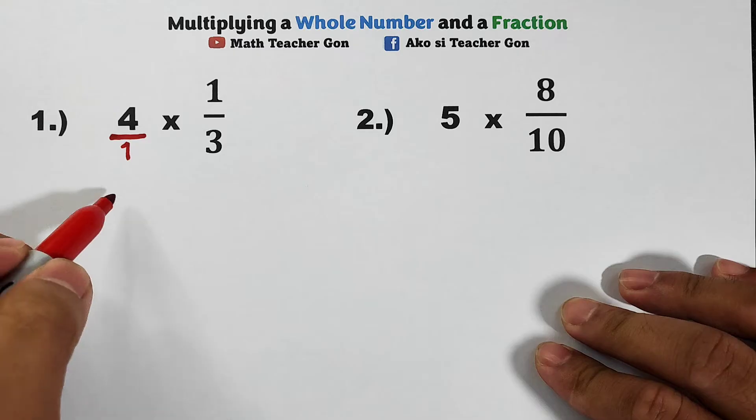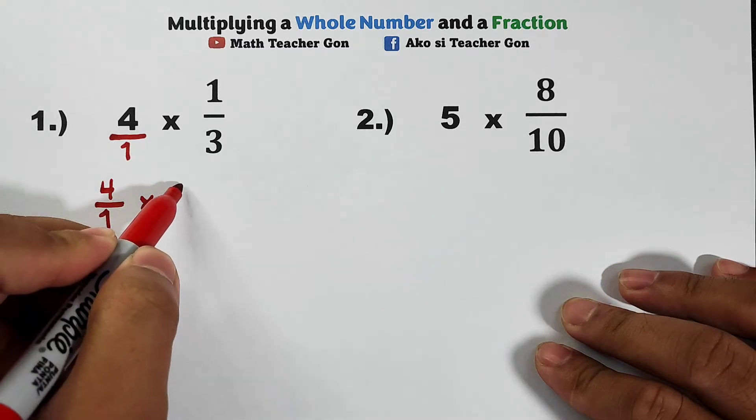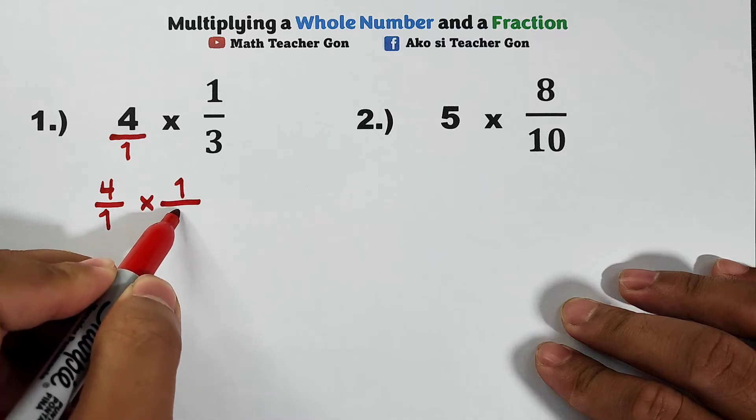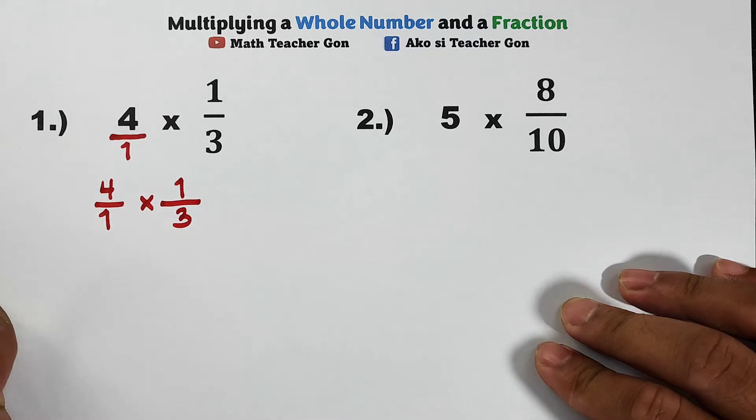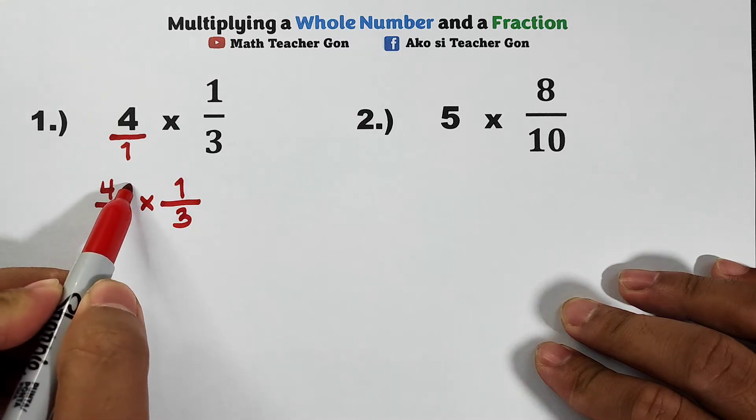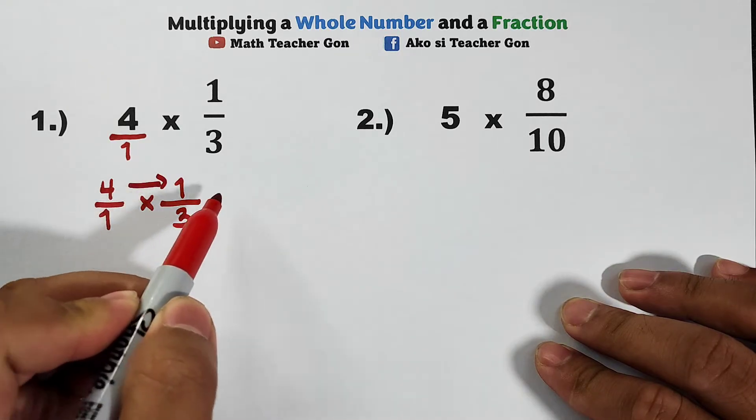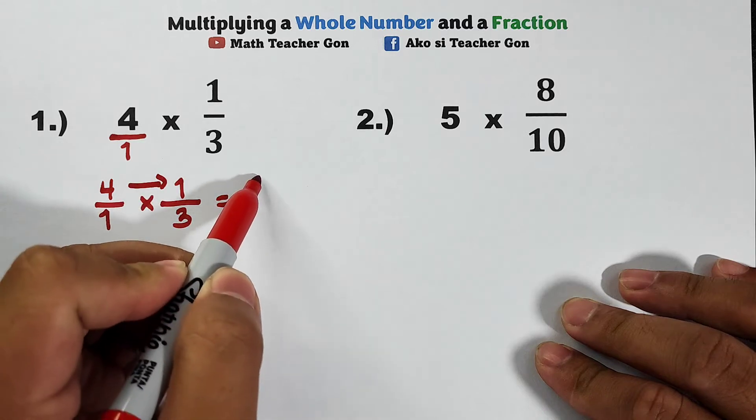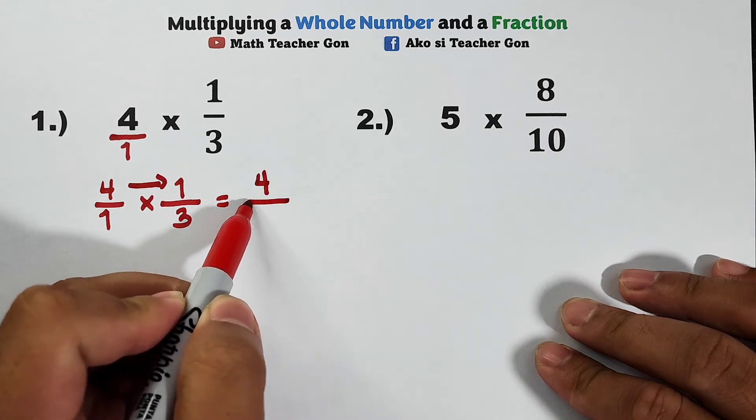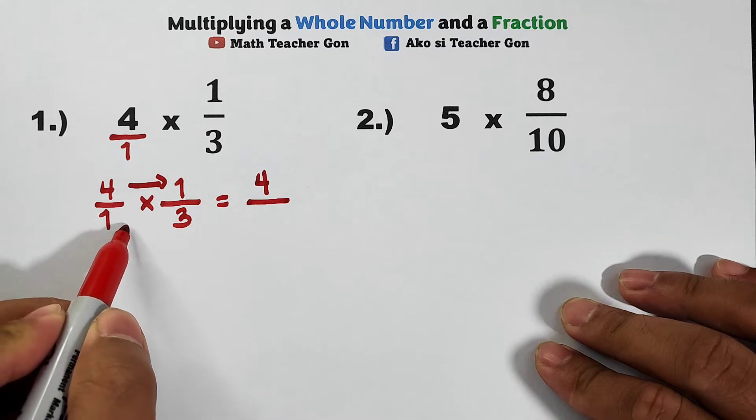So you have 4/1 times 1/3. Basic rule in multiplying fractions: multiply the numerators and denominators. That is equal to 4 times 1 which is 4, over 1 times 3 which equals 3.